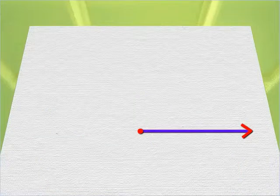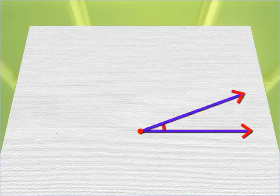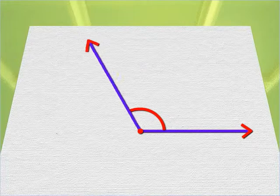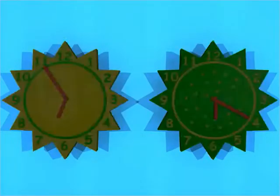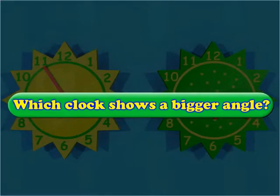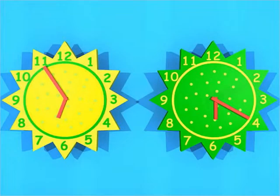Thus, we can say that wider the arms of an angle, bigger the angle. Look at these two clocks. Which clock shows a bigger angle? It is the yellow clock, as the hands of this clock open wider than the hands of the green clock.